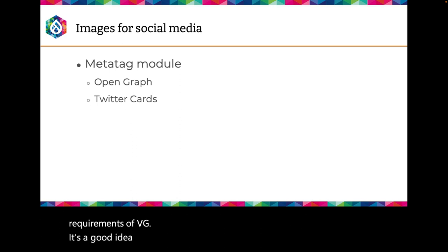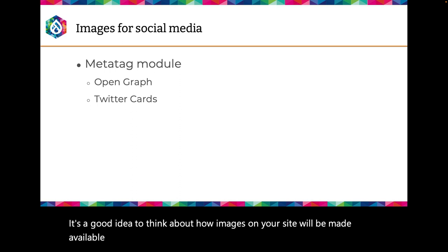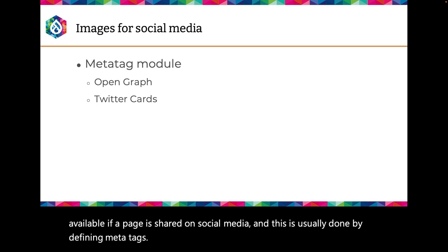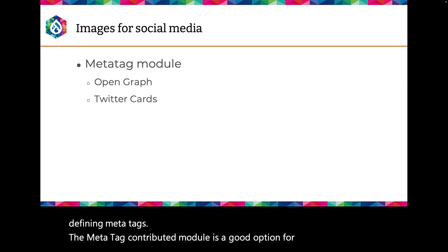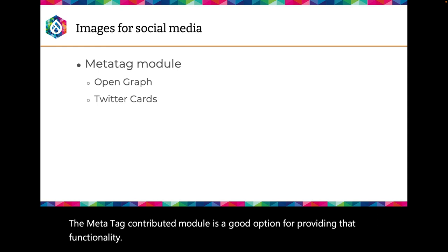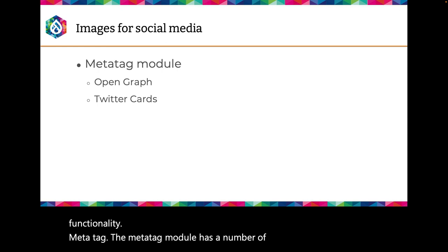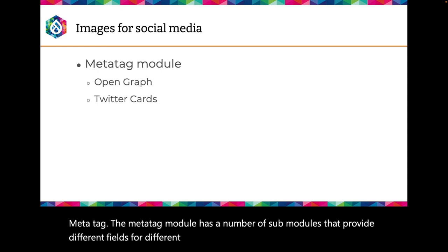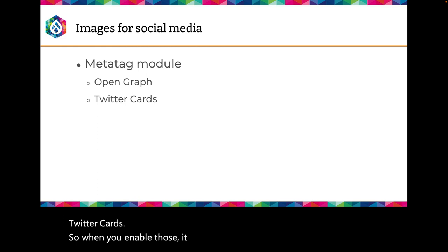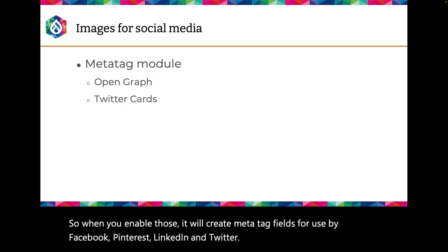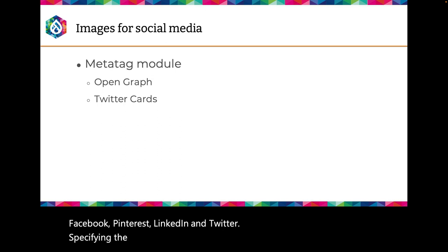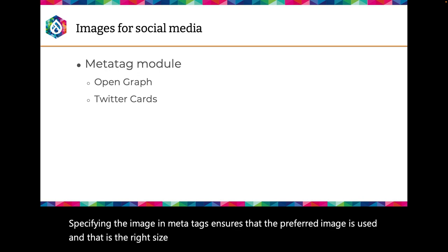It's a good idea to think about how images on your site will be made available if a page is shared on social media, usually done by defining meta tags. The meta tag contributed module is a good option for this. It has sub-modules including Open Graph and Twitter cards, which create meta tag fields for use by Facebook, Pinterest, LinkedIn, and Twitter. Specifying the image in meta tags ensures that the preferred image is used and that it's the right size and dimensions for social media platforms.